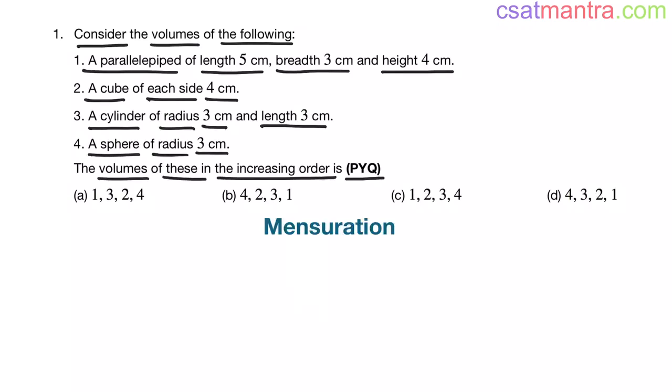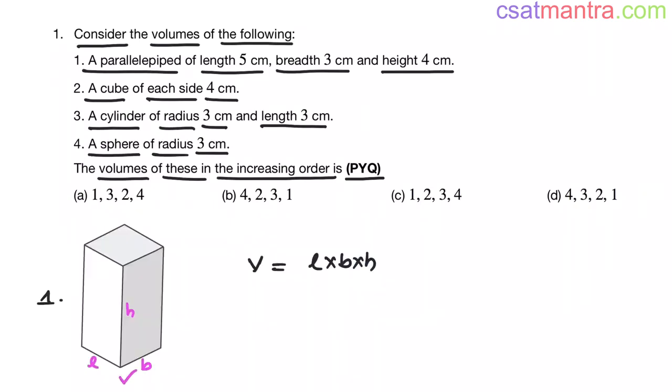This is a previous year question from mensuration chapter. This is parallelepiped. Volume of parallelepiped is length into breadth into height. This is similar to cuboid. In cuboid and parallelepiped, sides are not equal. Whereas in cube, all sides are equal.